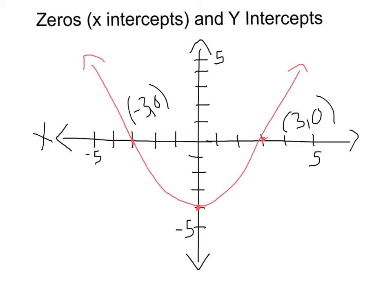The y-intercept is where the graph crosses the y-axis. We see the graph crosses right down here at (0, -4). So remember, the x-intercept or zero is where it crosses the x-axis, and the y-intercept is where it crosses the y-axis.